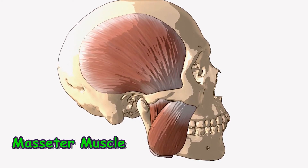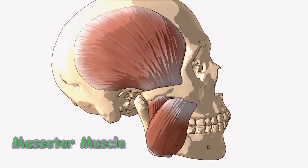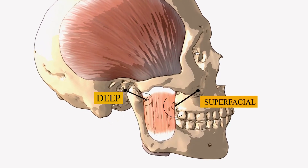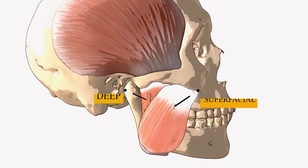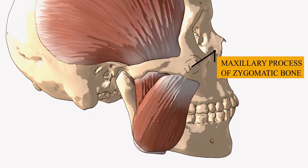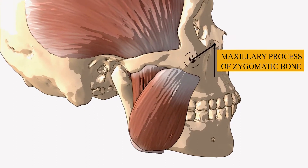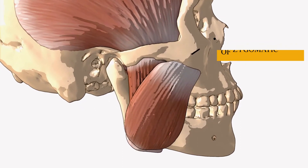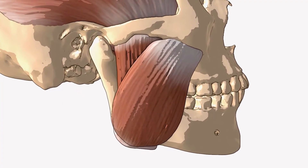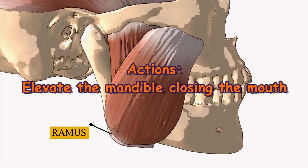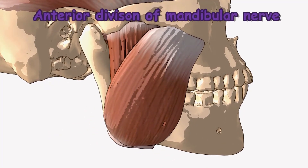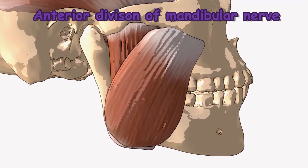The masseter muscle is the most powerful muscle of mastication. It is quadrangular in shape and has two parts — deep and superficial. The superficial part originates from the maxillary process of the zygomatic bone. The deep part originates from the zygomatic arch of the temporal bone. Both parts attach to the ramus of the mandible. Its action is to elevate the mandible, closing the mouth. Innervation is by the anterior division of the mandibular nerve.